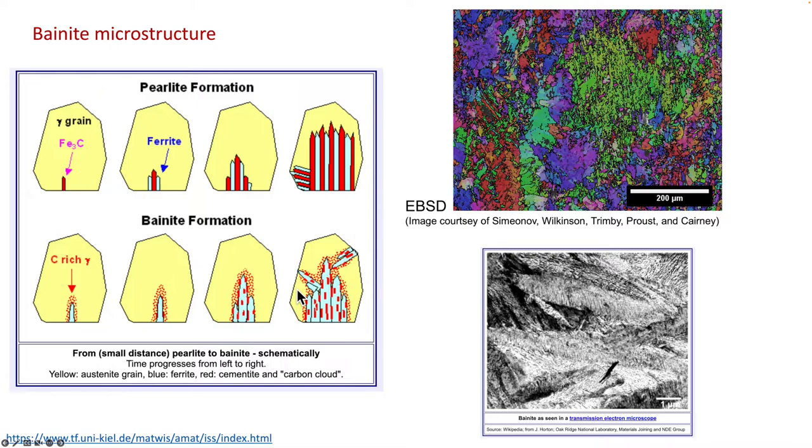In many cases, those carbon atoms can precipitate out to form cementite at the bainite grain boundaries. This microstructure is called upper bainite. If the cooling rate is a bit high, then a lot of cementite precipitates can form within the bainite grains, and these ones are called lower bainites.